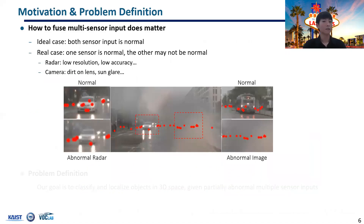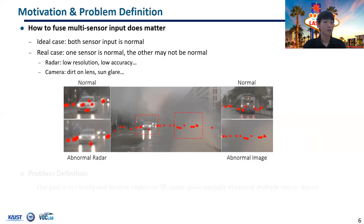Most learning-based sensor fusion studies assume that both input data provide useful information and can both contribute to improving detection performance. However, one of the input data can be abnormal and cannot contribute to improving performance. In the worst case, performance can even be degraded if the abnormal data affects the result more than the normal data. In the shown example, the radar input on the left vehicle is not normal and the image input on the right bus is not normal. This kind of situation can commonly happen in the real world, but it has not been studied thoroughly in previous research.